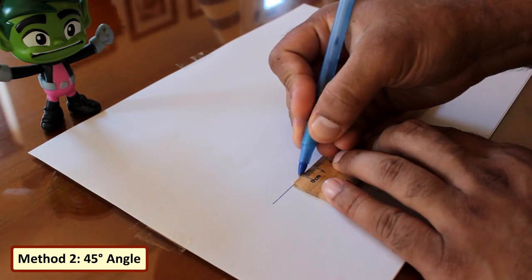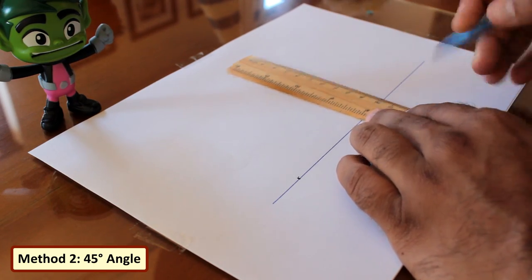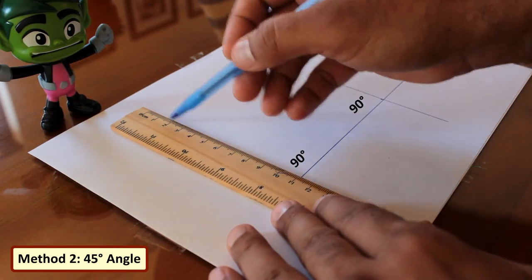Now on a piece of paper draw a line equal to the length of the screen. Then draw two lines on each end at 90 degrees with the length we calculated for the height of the screen.